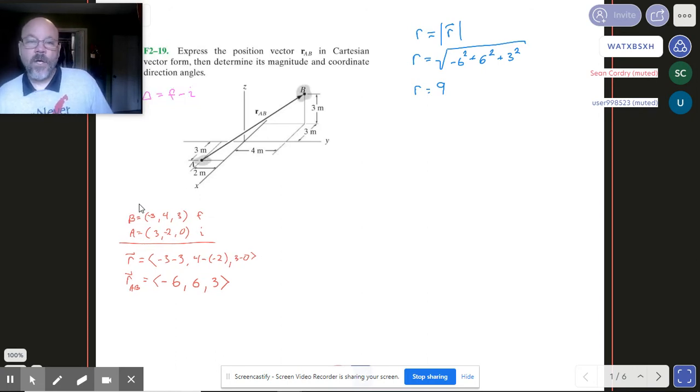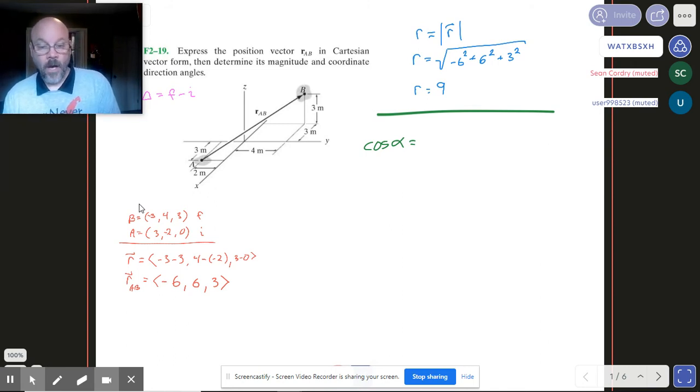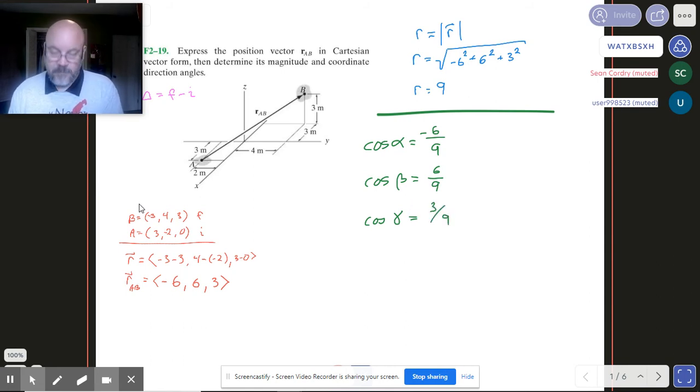All right, so now we want to get the direction cosines. And since we've got the magnitude and we have all of our components, that turns out to be super easy to do. Let's do these ones in green. And so the cosine of alpha is going to be the x component of R, which is negative 6, divided by the magnitude, which is 9. And we'll keep going here. Cosine beta then is going to be positive 6 over 9. And the cosine of gamma is going to be 3 over 9. So then you can just run those on your calculator, figure out what alpha, beta, and gamma are. And that's going to work out for you.